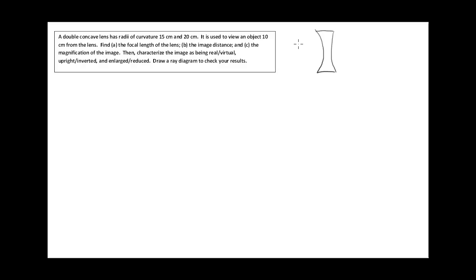Find the focal length of the lens. We're told there are radii of curvature of 15 centimeters and 20 centimeters. Just from the way it's drawn, I can tell the two sides of the lens have different radii of curvature — the left side is much more curved, meaning a smaller radius. Whenever we use the lens maker's equation for part A — 1/f = (n−1)(1/r1 − 1/r2) — we have to first define what we mean by side 1 and side 2.